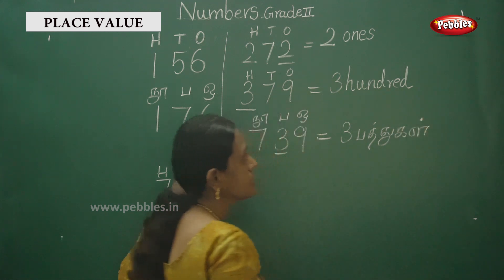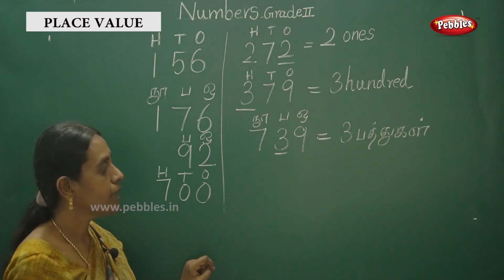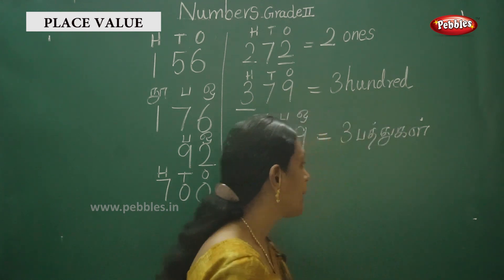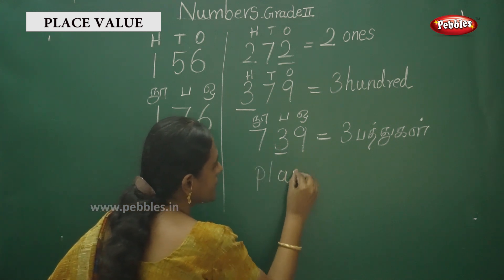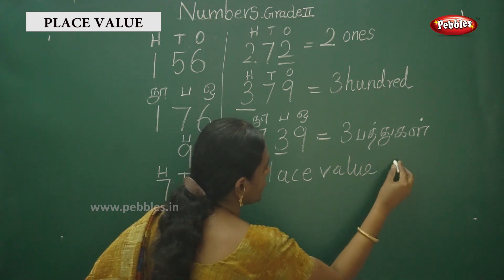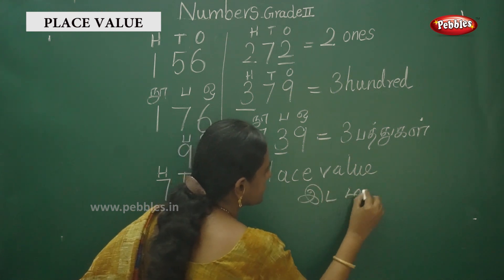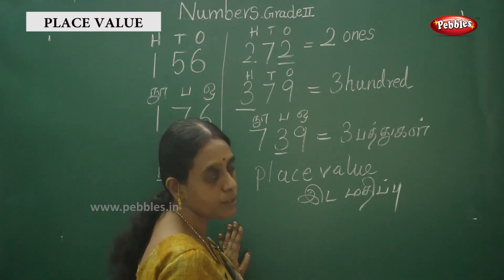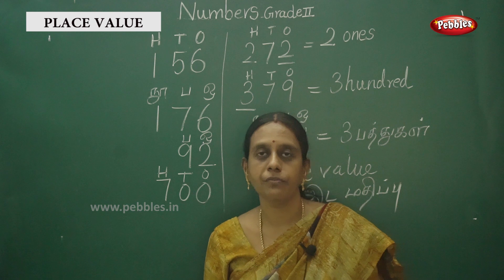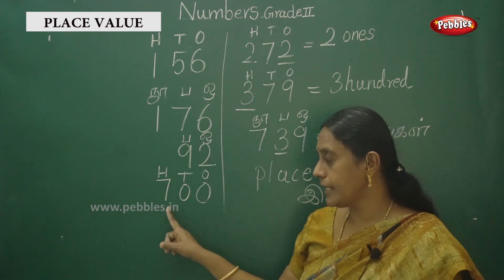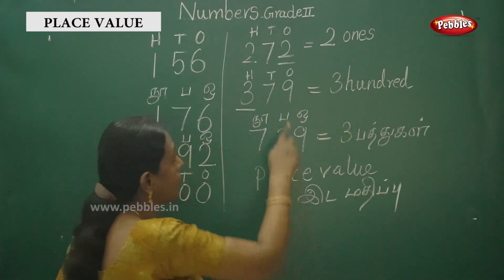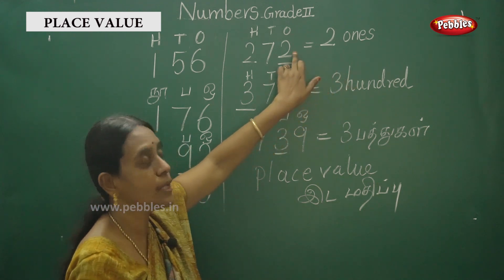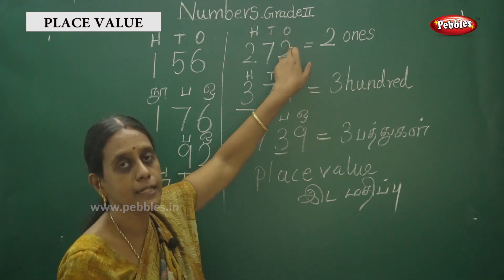Okay children, so this is the way to write place value. And next one — it is one place value. That is place value. I discuss the place value. One more thing — now we have discussed this chapter. Let's discuss face value. Face value — the number itself, what number — now underline digit 2. Face value, place value — two ones. Face value — you have to write its number.